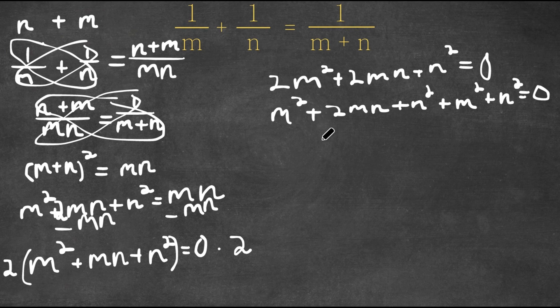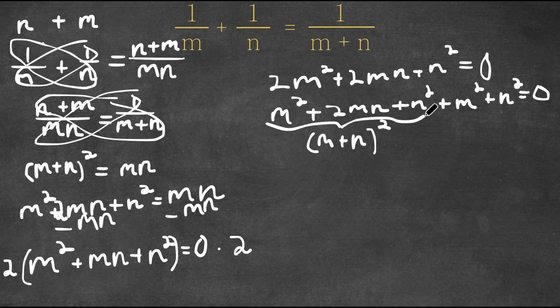Now this would be m plus n squared. So we have m plus n squared plus m squared plus n squared. And this is equal to 0.